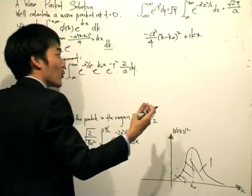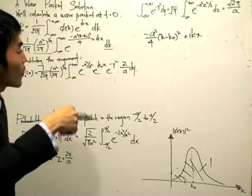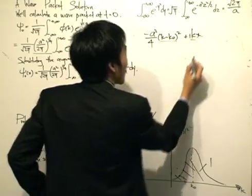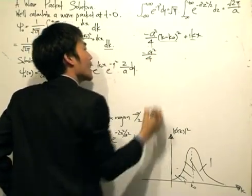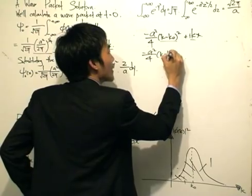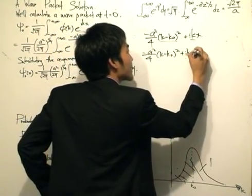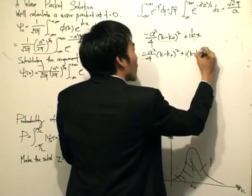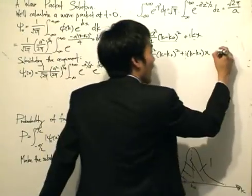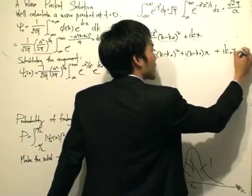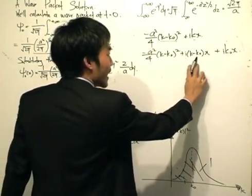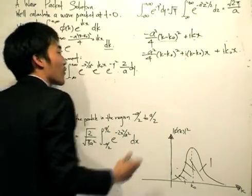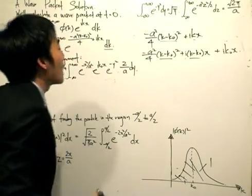For us to carry out the completing the square, we need to write the variables that we are completing the square in the same form. As you can see over here, it's not really the same thing because we've got a k minus k naught and we've got a k. So maybe we will write a squared divided by 4, then a k minus k naught squared, plus i bracket k minus k naught times x. And as always, I need to compensate that by adding ik naught x, because I've multiplied the ix and the k naught — that's a term we don't have to begin with. Now I have a chance of completing the square because I've got a k minus k naught and a k minus k naught over there.